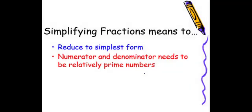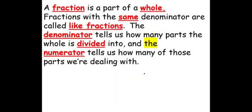Simplifying fractions means to reduce to simplest form. The numerator and denominator need to be relatively prime numbers. A fraction is part of a whole. Fractions with the same denominator are called like fractions. The denominator tells us how many parts the whole is divided into, and the numerator tells us how many of those parts we're dealing with.